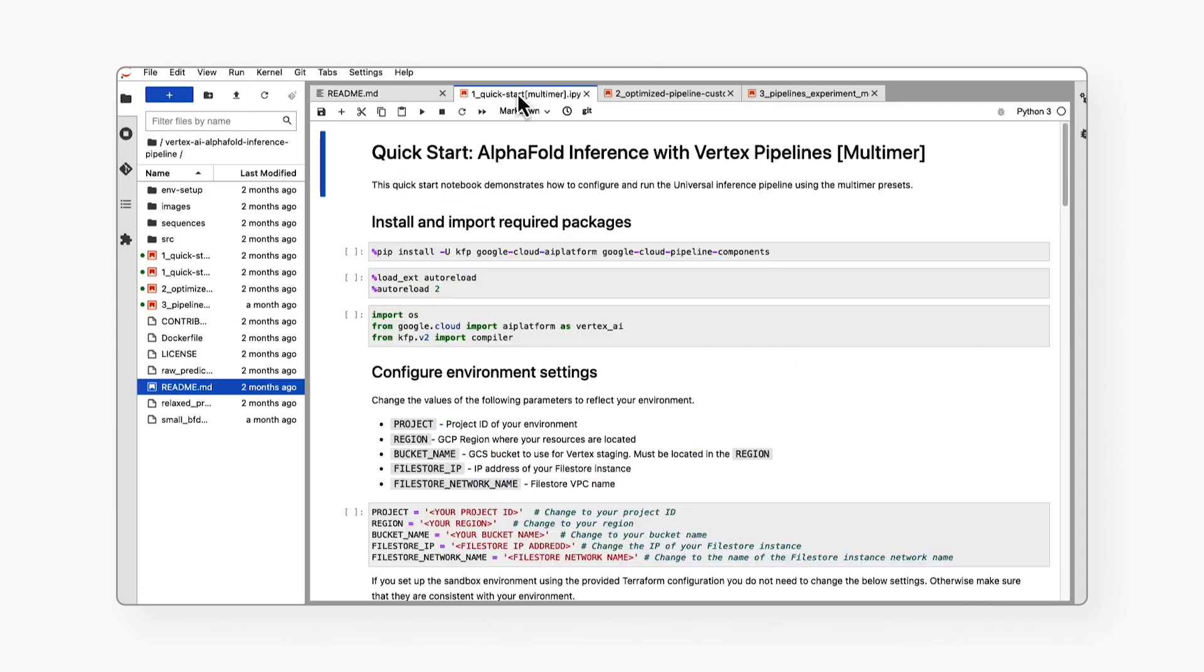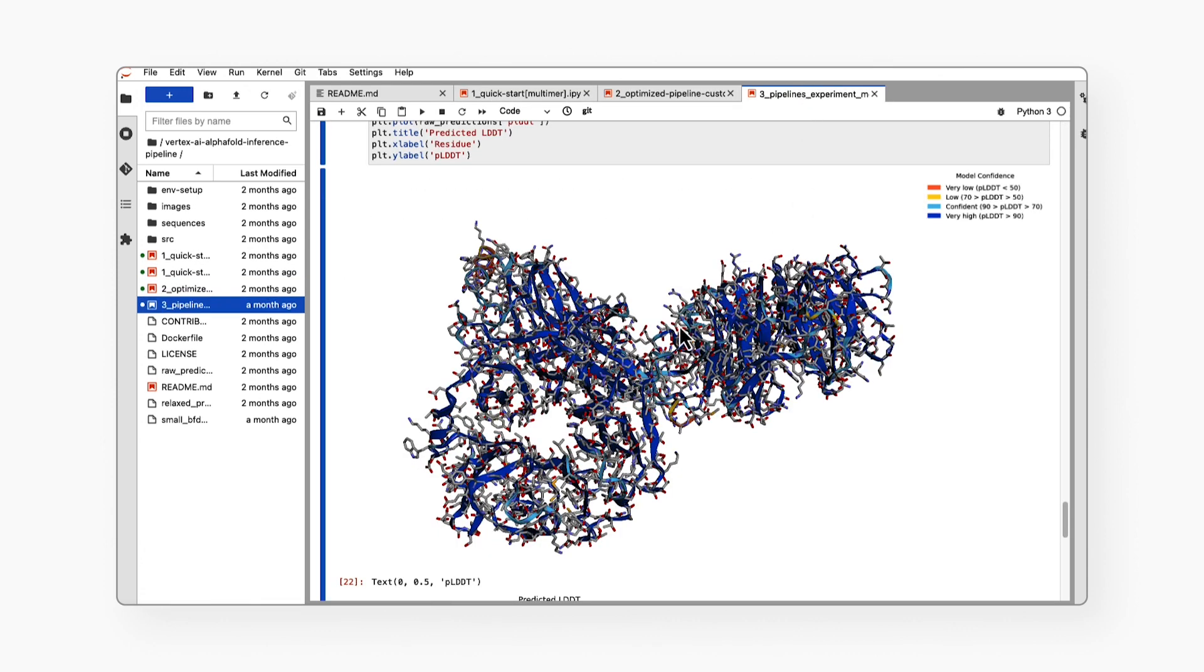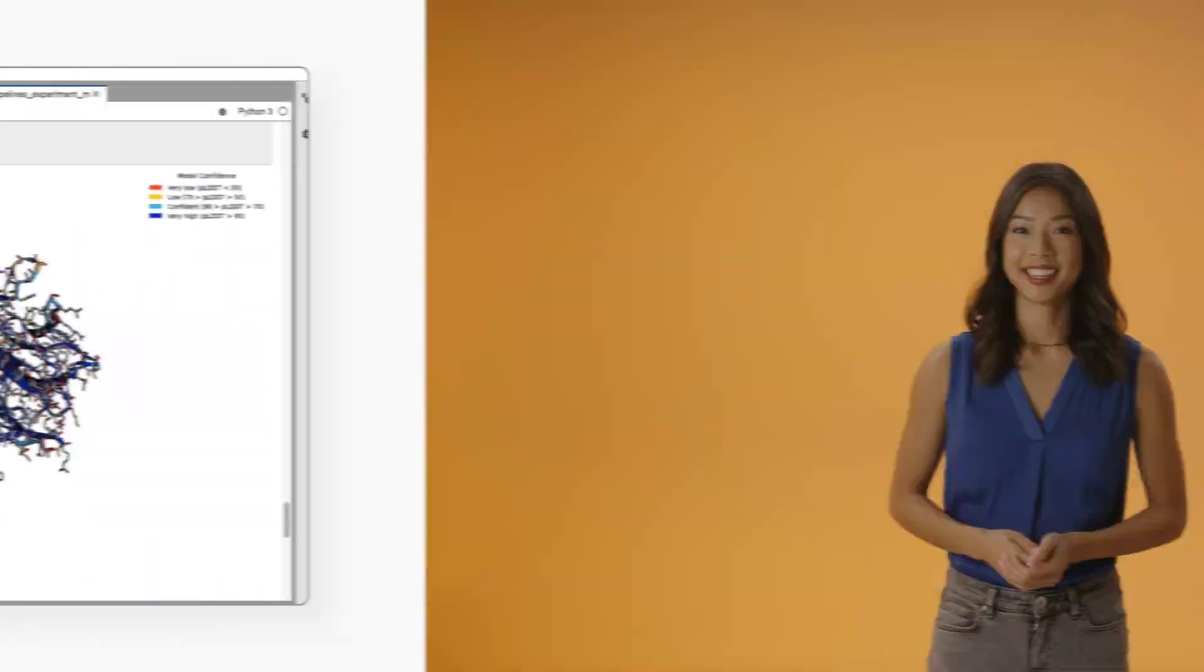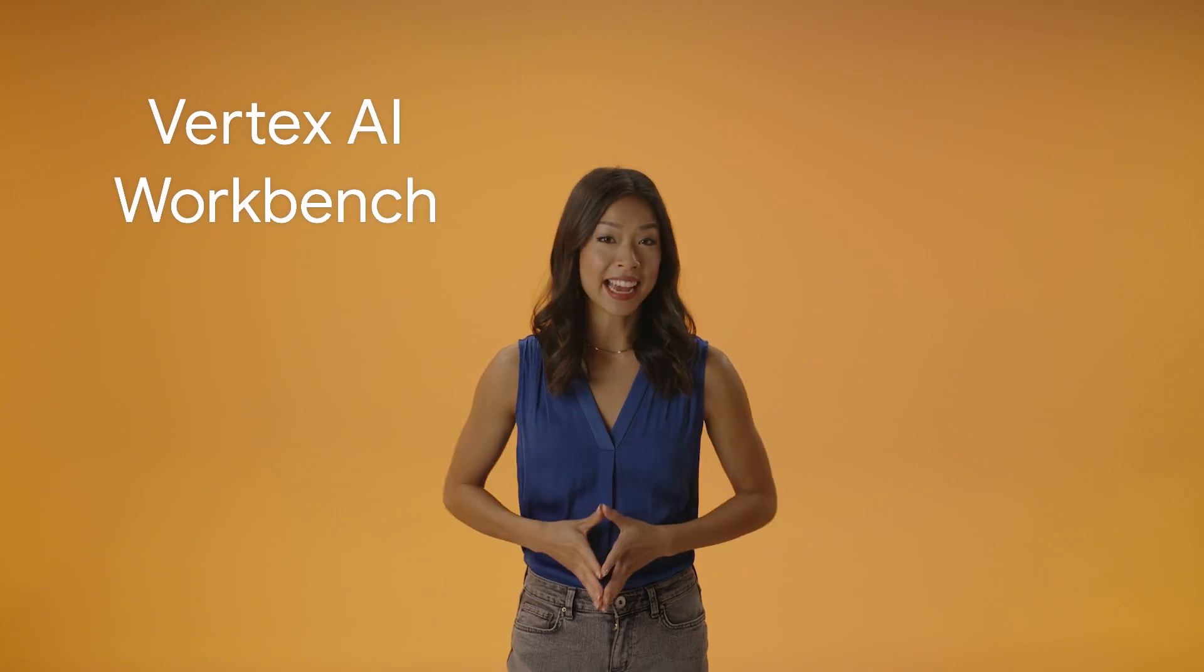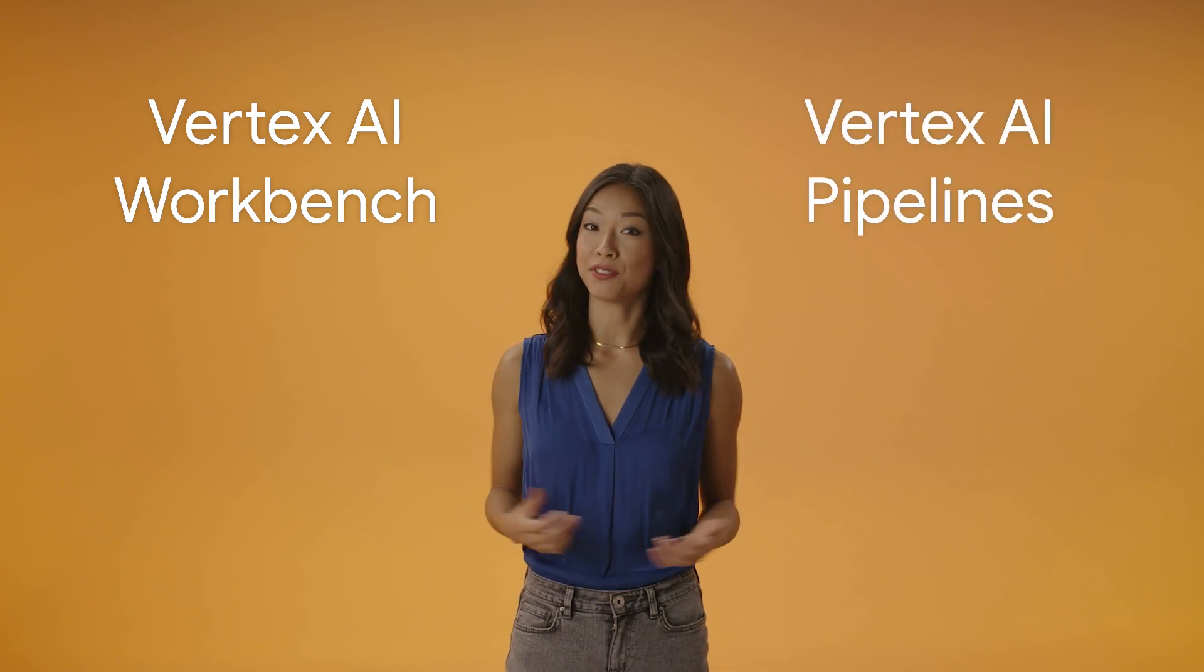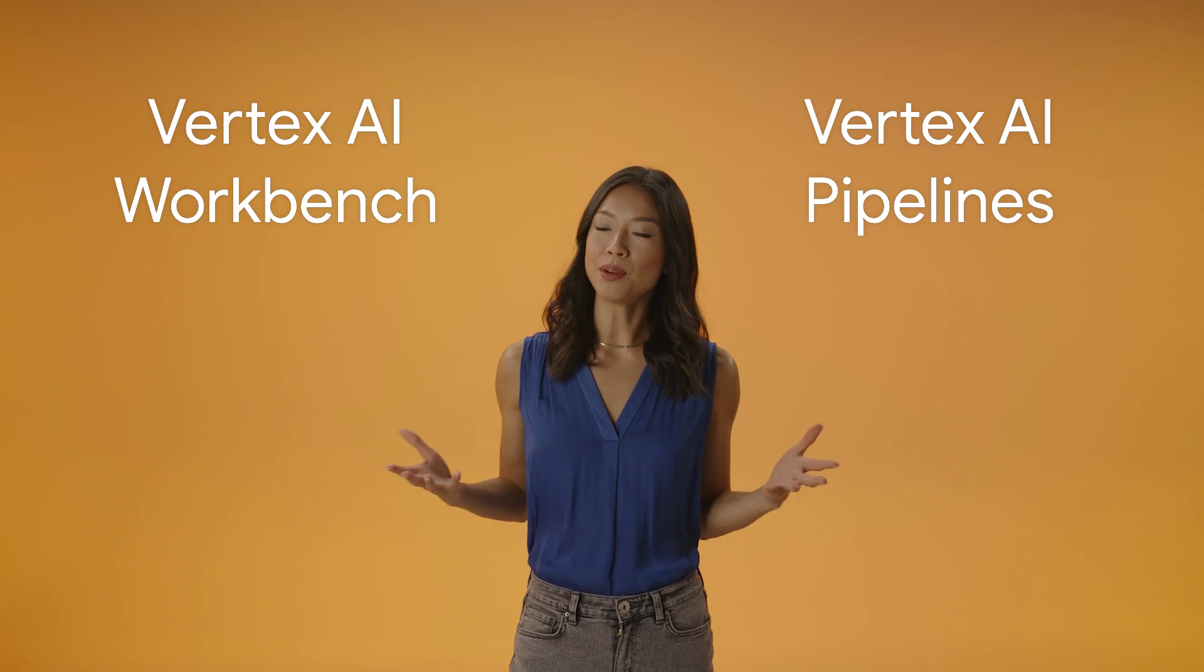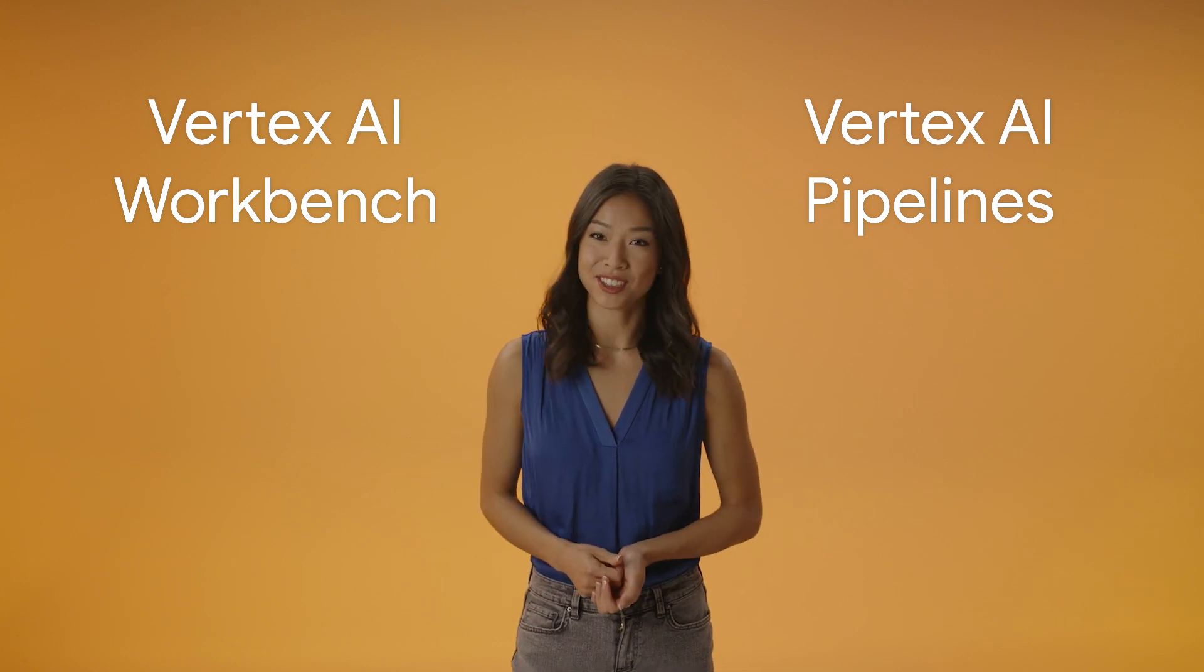You get example components, pipelines, and notebooks to start, analyze, and recompile pipelines on different GPUs. The AlphaFold Vertex AI workbench solution is great for experimental use while the AlphaFold batch inference solution on Vertex pipelines is great for doing protein folding at scale with a strong process for reproducibility and tracking.